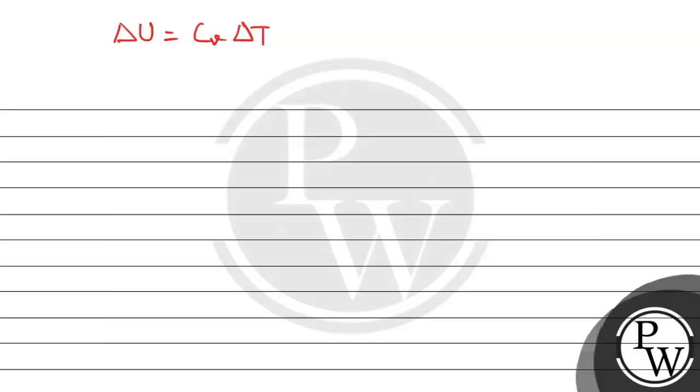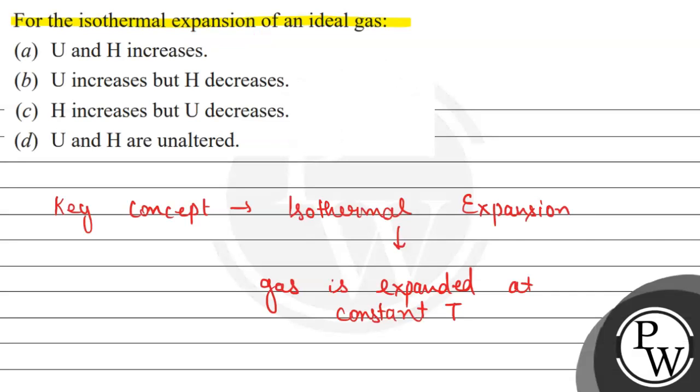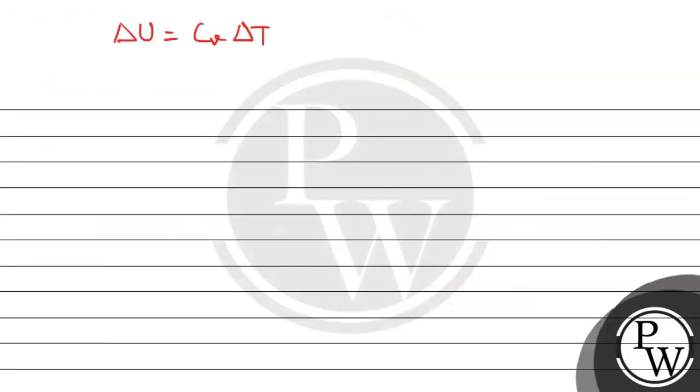According to this isothermal expansion, we have T that will be constant, so change in temperature will be zero. This way we get ΔU equals zero in the case of isothermal expansion.